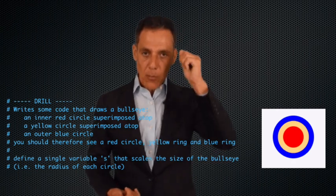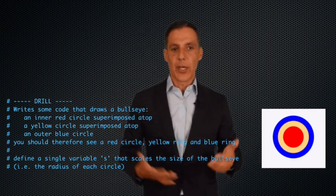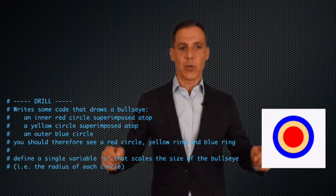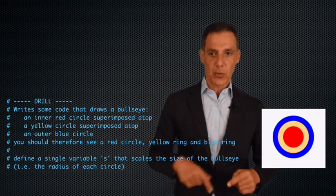In this case, what I would do is draw a blue circle, define a canvas, draw a blue circle, run it, make sure it works, and then draw the yellow one, make sure it works, and then draw the red one, and make sure it works.